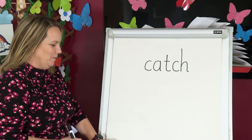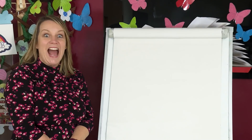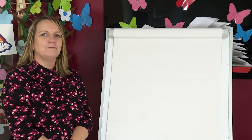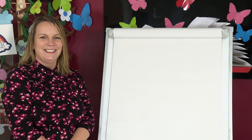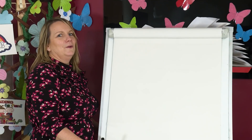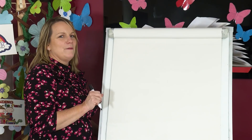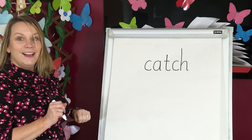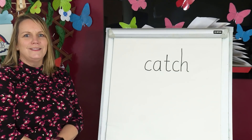Let's hide the word. Now you have a go. Say the word. Say the sounds. Write them down. Don't forget the trigraph — three letters, one sound. Okay. Have you got your three sounds written down? Fabulous. Let's check our spelling. Show me your spelling. Did you get it right? C, a, tch. Catch. Well done.